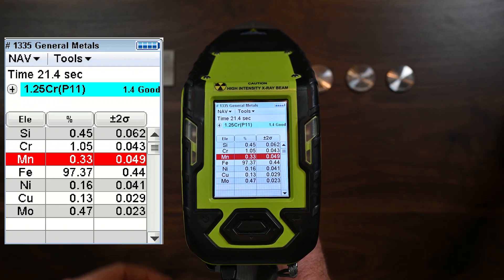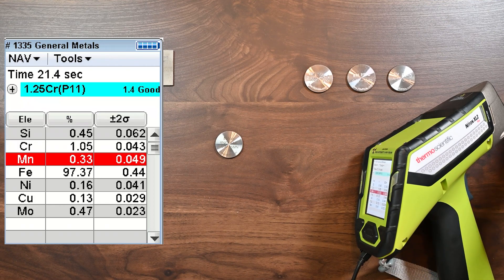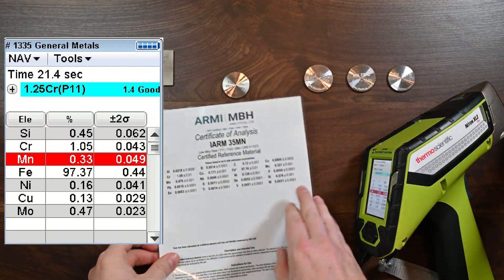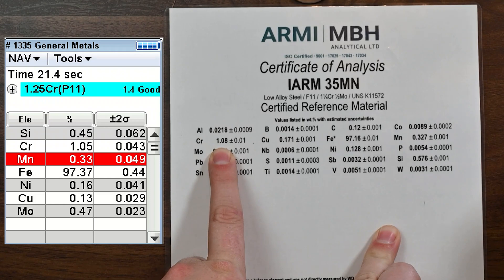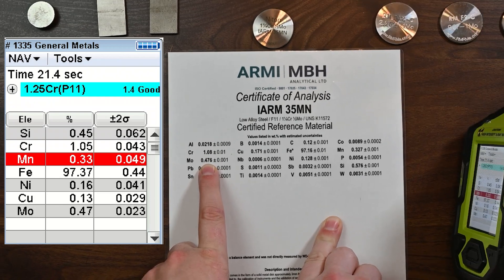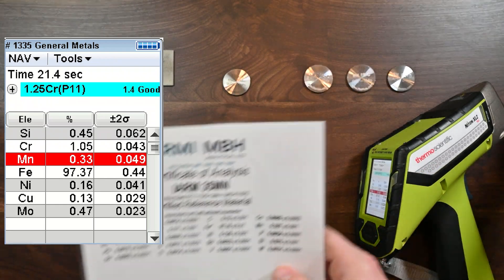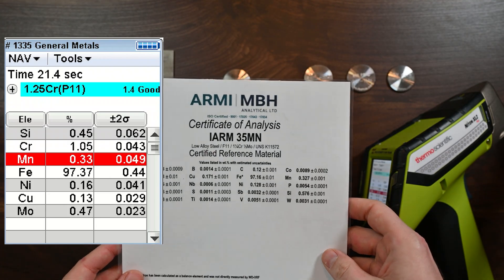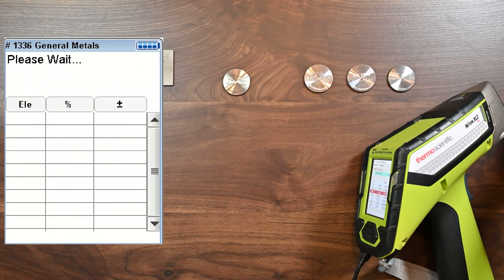And we're back. And so now we're going to take a look at the certificate of analysis. So you should be able to see my screen, the screen of the analyzer, but let's take a closer look at that alloy, right? So if we were to do something like this and look at a certificate, our chrome is at 1.08% and we read 1.05. That's within 0.03. That's really spot on. And that molly, 0.476, and we read 0.47. I mean, this analyzer is doing a great job of nailing the chemistry. So this is a certificate of analysis. This is a certified reference material. And that's kind of how you know your analyzer is working properly. So if you need things like this, you can find them on alloygeek.com. But let's keep going here and take a look at another sample.